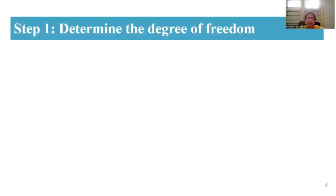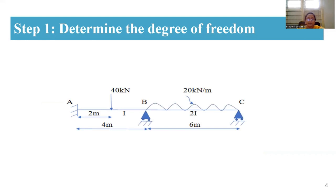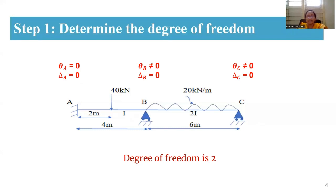Step one is to determine the degree of freedom. At support A, theta_a equals zero and delta_a equals zero. At support B, theta_b is not equal to zero but delta_b equals zero. At support C, rotation is not zero and displacement is zero. Therefore, the degree of freedom is two — that is theta_b and theta_c — and these are the unknowns to be found.